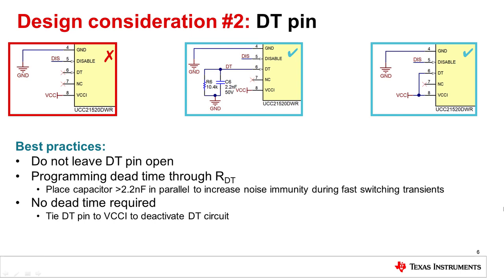Programmable dead time can be set by the user by placing a resistor between the dead time pin and ground. Half-bridge driver topologies require that both FETs are never switched on at the same time, in order to prevent shoot-through, which can damage the device. Programming the dead time to provide sufficient time between each input switching high is necessary for proper operation. Just as the disable, IN-A, and IN-B pins require filtering for optimal performance, similar considerations must be taken for the dead time pin. A floating dead time pin should be avoided to prevent noise from coupling in and disturbing the dead time duration. If programming the dead time through a dead time resistor, place a capacitor in parallel with a value greater than 2.2 nanofarads to increase noise immunity during fast switching transients. If no dead time is required, tie the dead time pin to VCCI to deactivate the dead time circuit.